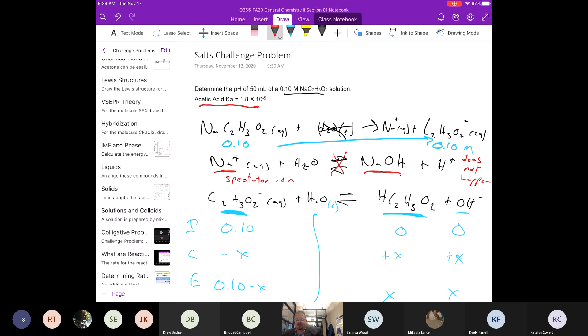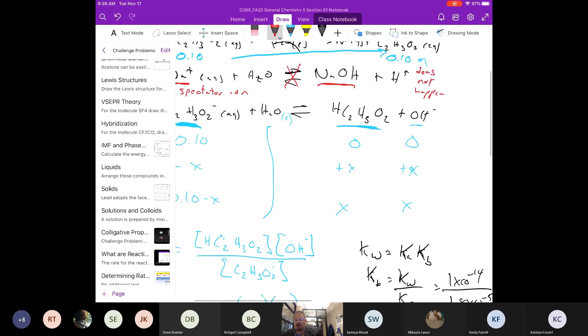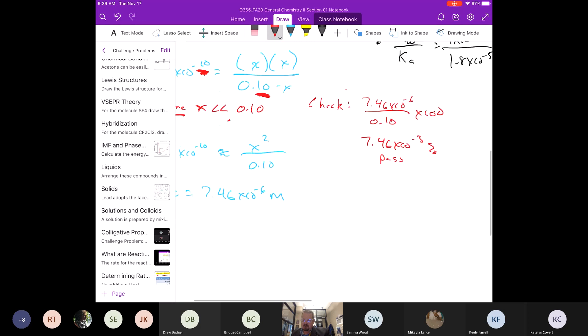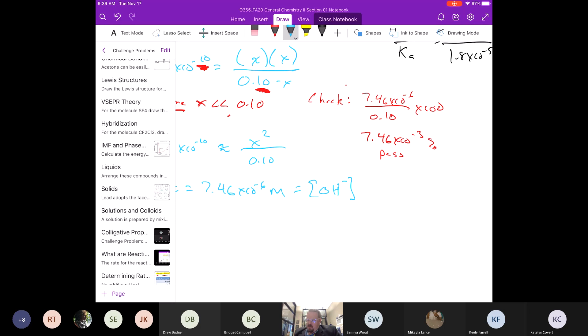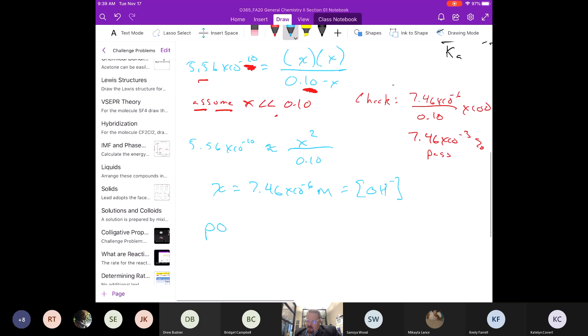Well, X is the concentration of OH minus, which will help us get the pH, but it is not the pH.